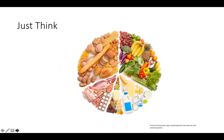Think about what types of foods contain carbohydrates and what types do not. A lot of times when people think of carbohydrates, they think of sugar, candy, sweets, honey, and syrup. But there are a lot of foods that don't necessarily taste sweet that contain carbohydrates, such as starches — rice, potatoes, pasta, bread, cereals — and many different fruits and vegetables.